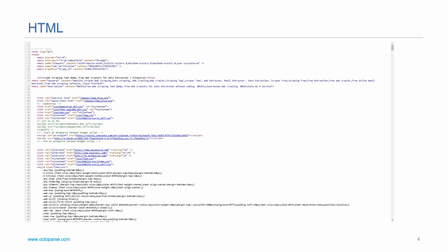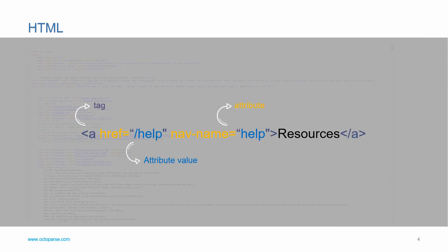Before we get into the detail, you need to know some basics of HTML. HTML stands for hypertext markup language that contains many elements. Each element is made of text and attributes, and browsers transform and visualize these markup tags into what we observe as websites.